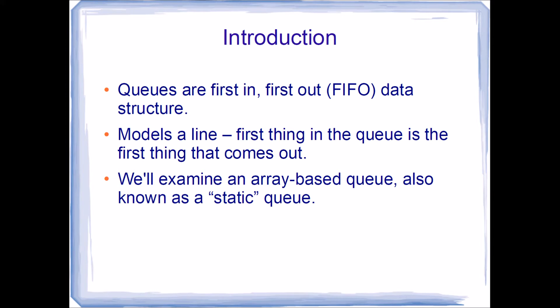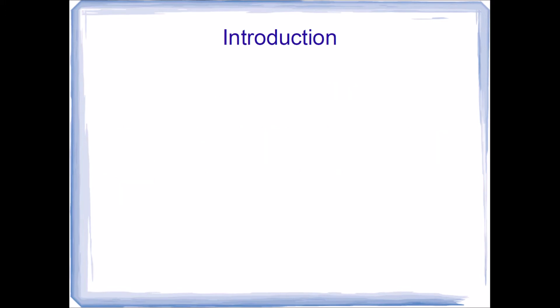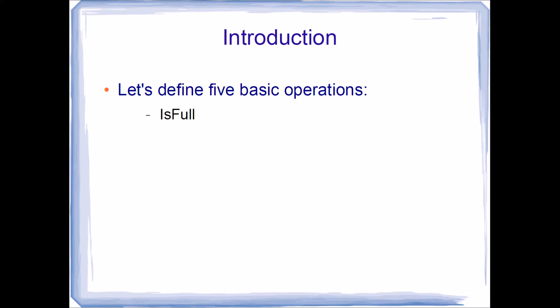In this video, we'll examine an array-based queue, which is also known as a static queue. Let's define five basic operations for our queue. We will have ISFULL, which determines if there's room to put another value into our queue. ISEMPTY, which determines if the queue is currently empty. INQ, the operation for adding new values to the end of our queue. DQ, used for removing values from the front of our queue. And PEEK, which returns a copy of the first value in the queue.